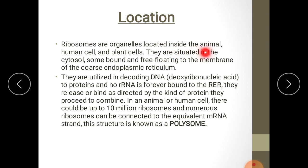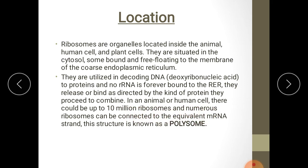Ribosomes are organelles located inside animal, human, and plant cells, situated in the cytosol — some free-floating and some bound to the membrane of the rough endoplasmic reticulum. They are utilized in decoding DNA to proteins. In an animal or human cell there could be up to 10 million ribosomes, and numerous ribosomes can be connected to the same mRNA strand; this structure is known as a polysome. Polysomes are formed to produce many copies of the same type of protein.